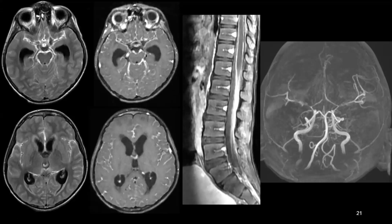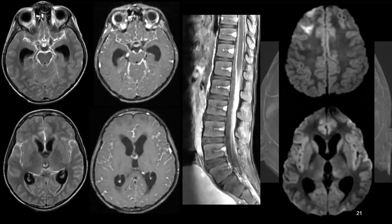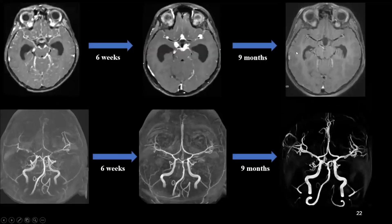This happens with all meningitis in the acute phase — you find the vessels in severe spasm. On diffusion imaging, you don't see much as on the TOF MRA, but there is a watershed infarct in the right ACA-MCA territory.